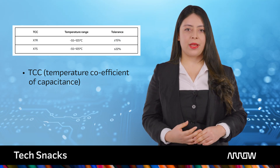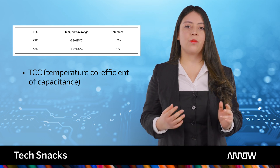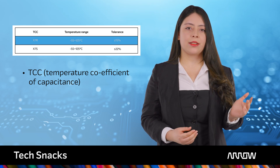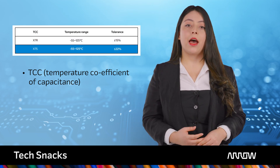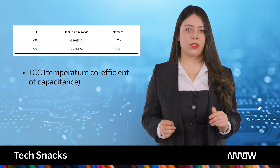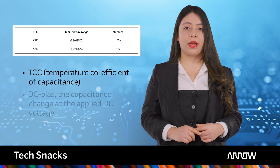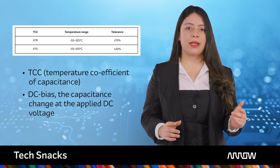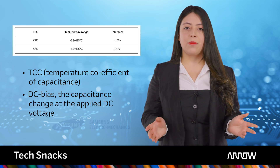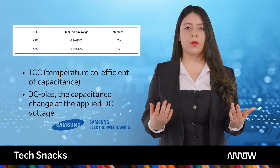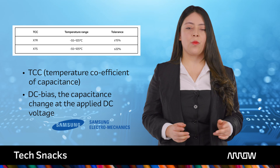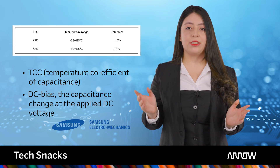With its narrow capacitance change tolerance band of plus/minus 15%, many design engineers will simply select the X7R product over X7S. However, when choosing an MLCC, it is important to consider not only the TCC but also DC bias — namely the capacitance change at the applied DC voltage. Samsung Electromechanics, also called SEMCO, focuses on MLCC solutions that provide strong performance in both TCC and DC bias parameters.